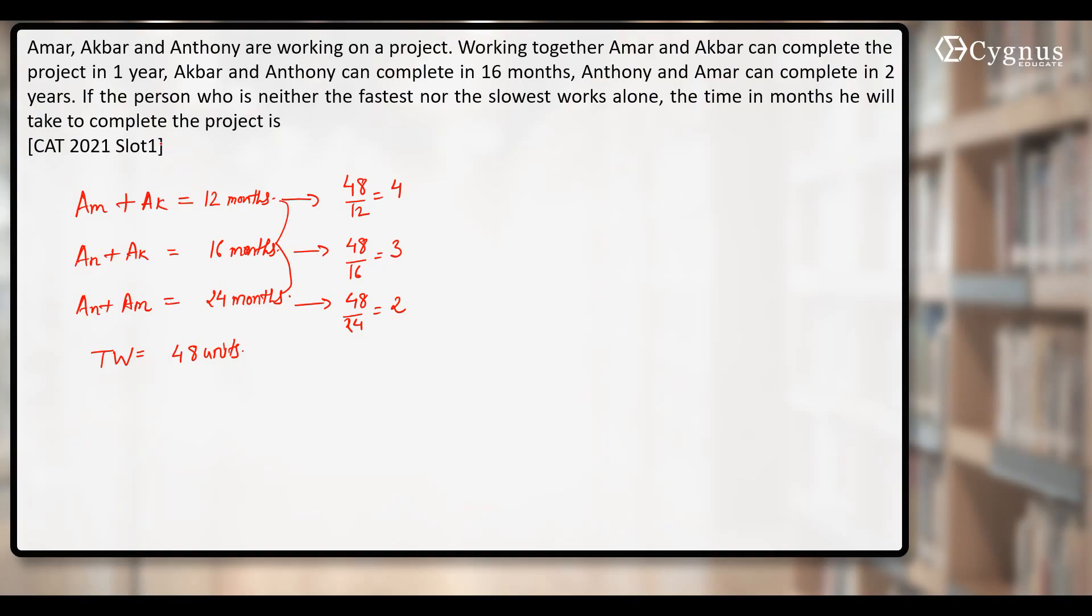Now we need to find, if a person who is neither the fastest nor the slowest works alone, the time in months he will take to complete the project. Let's add these 3 equations. When you add these 3 equations, Amar will appear 2 times, Akbar will appear 2 times and Anthony will also appear 2 times.